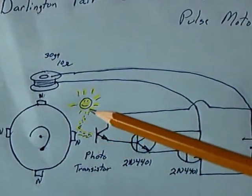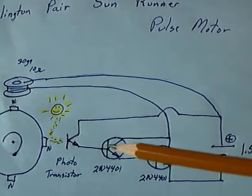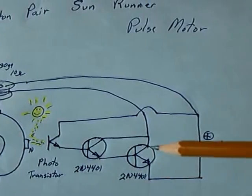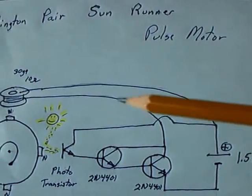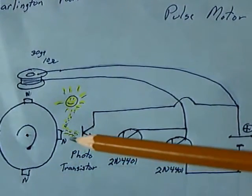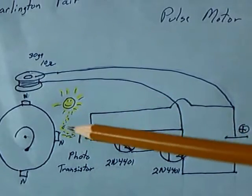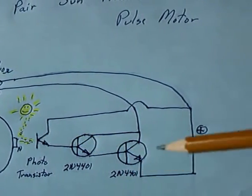Which finally flips the switch, which makes the circuit for the coil work and causes the rotor to move around until the next magnet comes up, reflects the sunlight, tickles the base of that, and off it goes again.